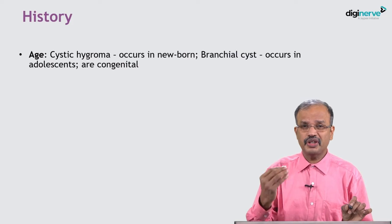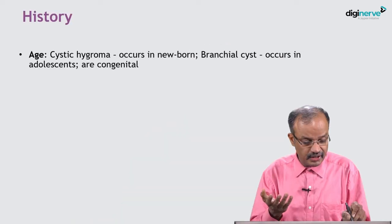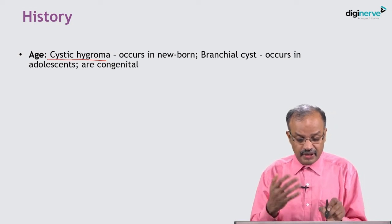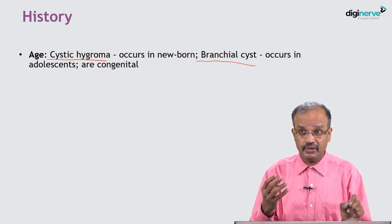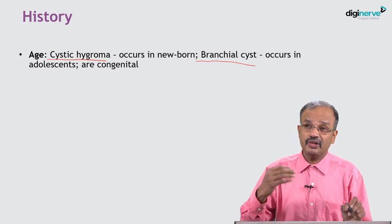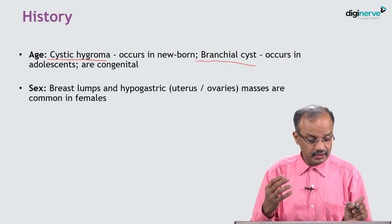When a patient presents with a swelling anywhere in the body, the first thing to ask is age, as it is very relevant. Many diseases occur in the newborn — for example, cystic hygroma, a swelling in the neck. Branchial cyst occurs in the adolescent, second decade or early third decade. These are congenital conditions. Malignancy occurs in later age groups, so age is very important to identify what the swelling may be.